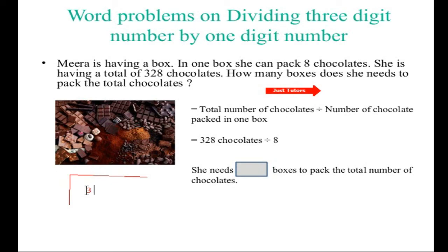We write down 328 as the dividend and eight as the divisor outside the bus stop. Eight goes into three zero times, so we pass that three to the two. Eight goes into 32 four times because eight times four is 32. Then eight goes into eight one time because eight times one is eight. So she needs 41 boxes to pack all the chocolates.